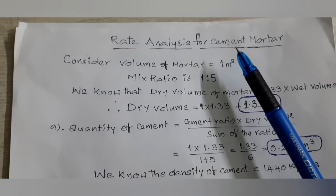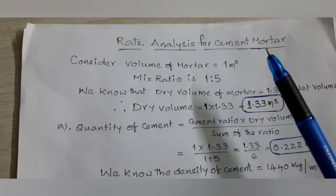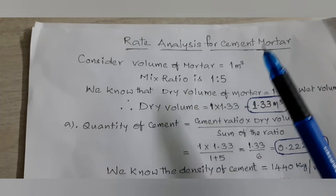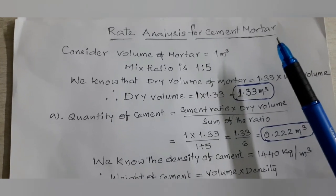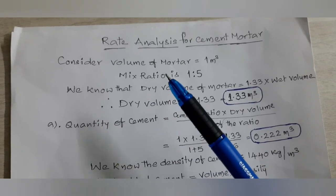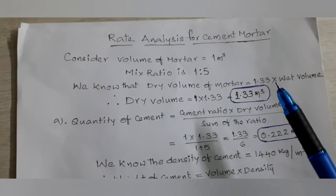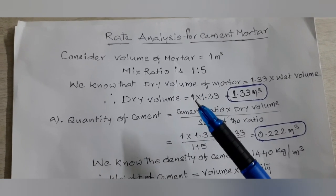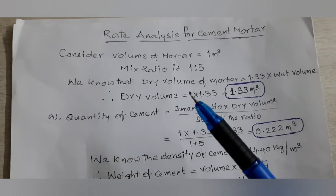Hello. This is a rate analysis of cement mortar. We consider the volume of mortar equal to 1 cubic meter, meaning we want to calculate the quantities of cement, sand, and labor for 1 cubic meter of mortar. The mix ratio is 1:5. We know that the dry volume of mortar equals 1.33 times the wet volume, so dry volume equals 1 cubic meter into 1.33, which is 1.33 cubic meters.